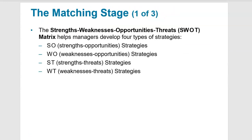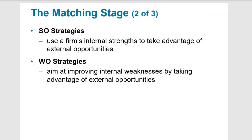The SWOT analysis is a very common analysis that most companies utilize in one form or another, and it's pretty simple. In four quadrants, we list our strengths and opportunities, weaknesses and opportunities those weaknesses may present, strengths and threats, and weaknesses and threats. SWOT stands for Strengths, Weaknesses, Opportunities, and Threats. We start by listing all the strengths, weaknesses, opportunities, and threats, then combine them: strengths with opportunities, weaknesses with opportunities, strengths with threats, and weaknesses with threats.